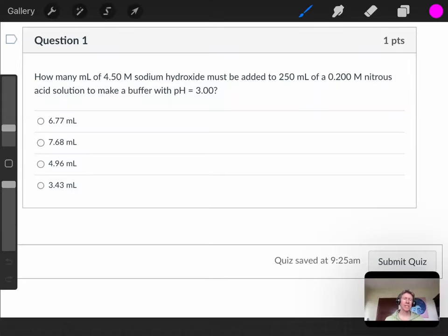For this problem, it says how many milliliters of 4.50 molar sodium hydroxide must be added to 250 milliliters of a 0.200 molar nitrous acid solution to make a buffer with pH equals 3.00. So we're making a buffer.